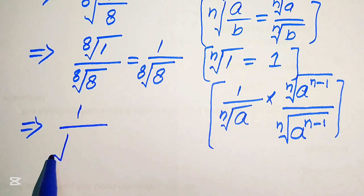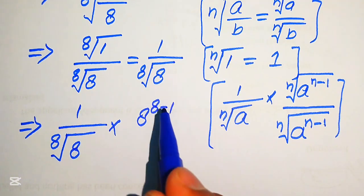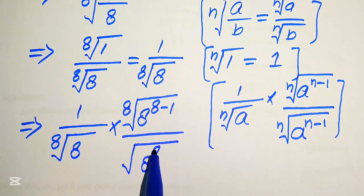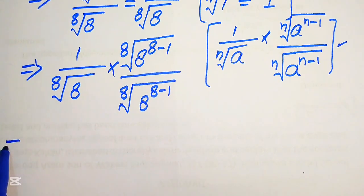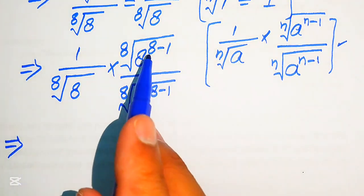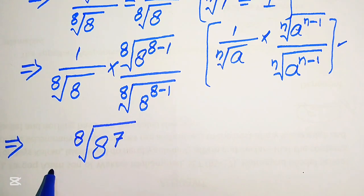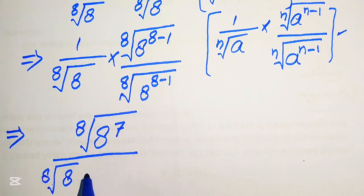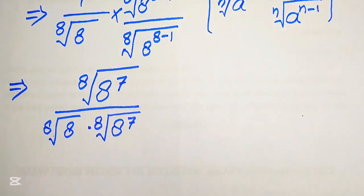So we write this in the form: 1 over the 8th root of 8, multiplied by the 8th root of 8 to the power of 8 minus 1, divided by the 8th root of 8 to the power of 8 minus 1. After applying this radical law and simplifying, we obtain the 8th root of 8 to the power of 7, divided by the 8th root of 8 multiplied by the 8th root of 8 to the power of 7.